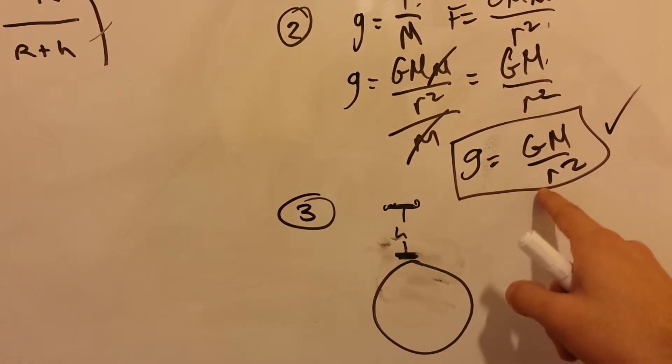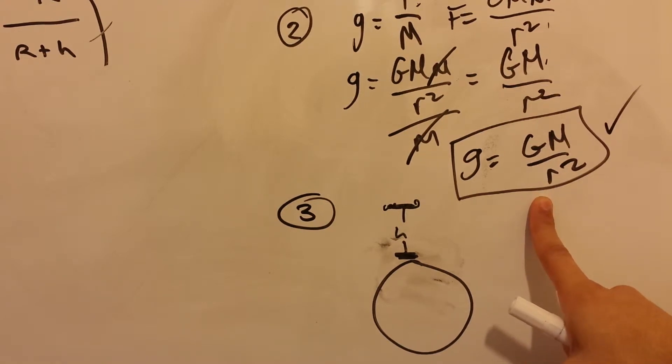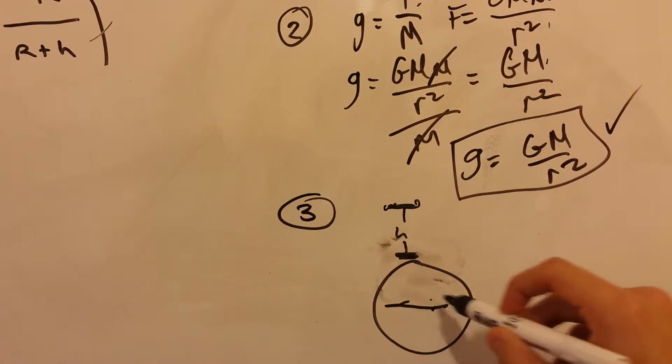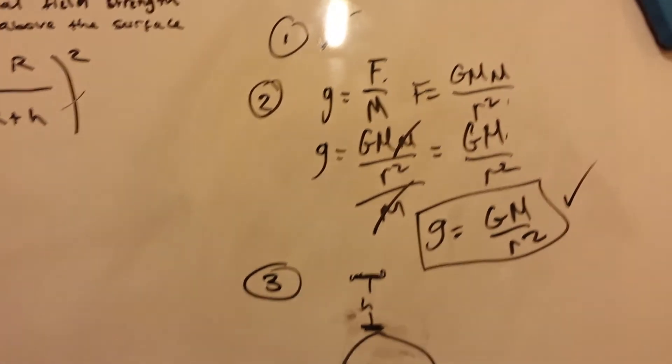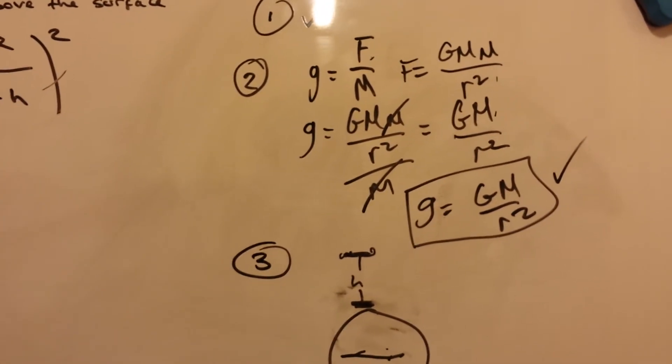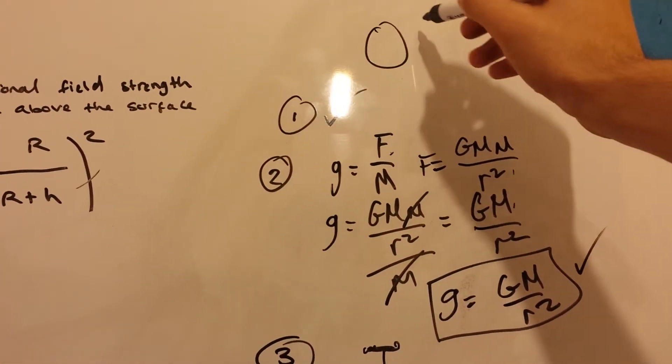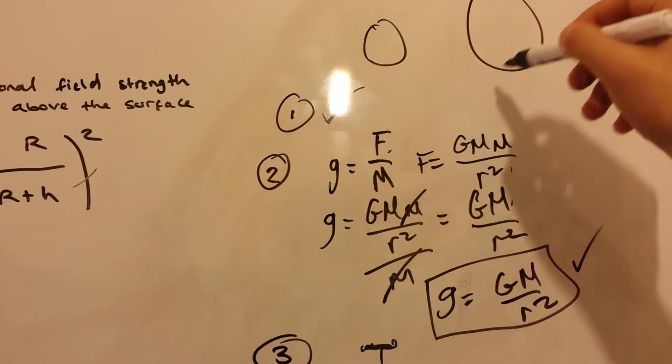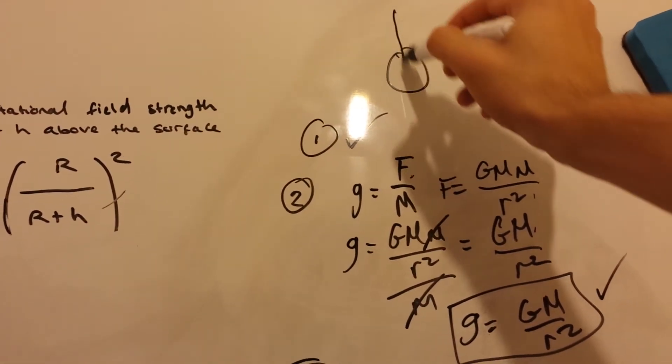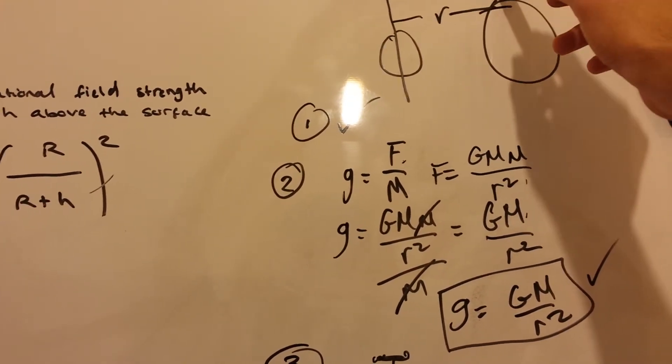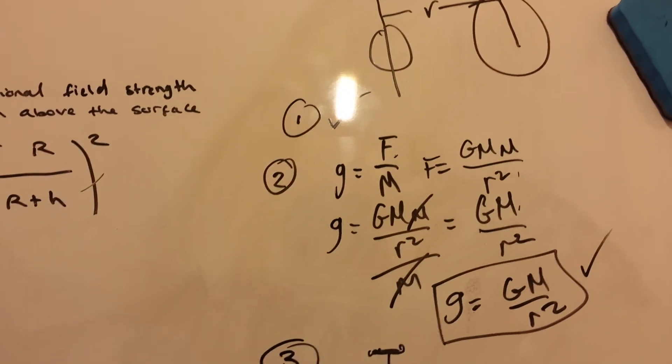That's wrong. R is a distance that starts from the center of the object. It's from the center of the object. So, if you want to find the gravitational force between two objects, let's say here's a small object and here's a big object. The distance will be from the center of one object to the center of the other.